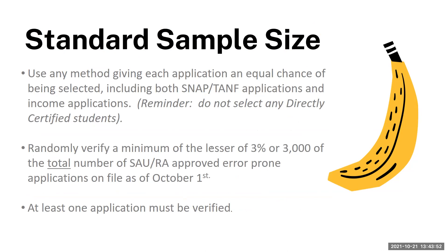Use any method giving each application an equal chance of being selected, including both SNAP and TANF applications and income applications. Do not select any directly certified students, so you'll want to cross check with your DC list. Randomly verify a minimum of the lesser of 3% or 3,000 of the total number of SAU or RA approved error prone applications on file as of October 1st, and at least one application must be verified.